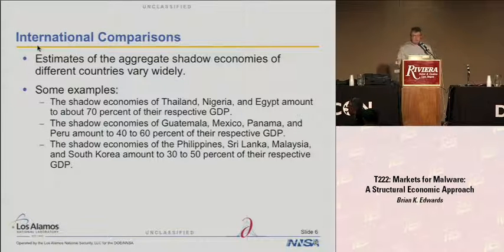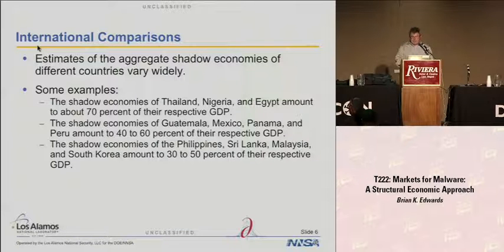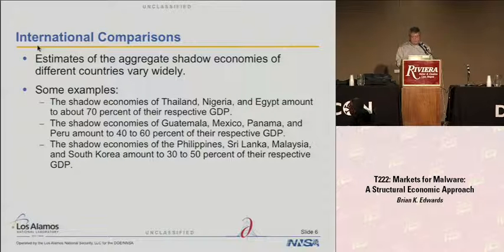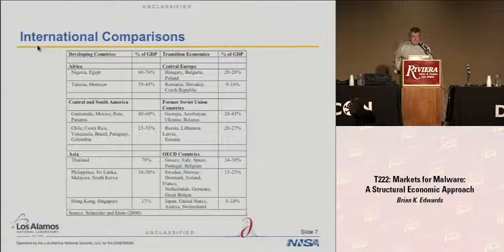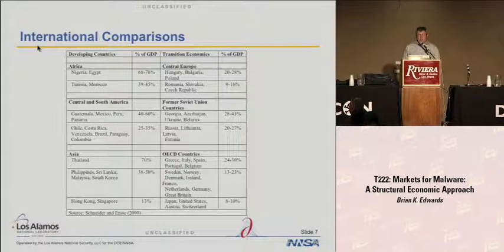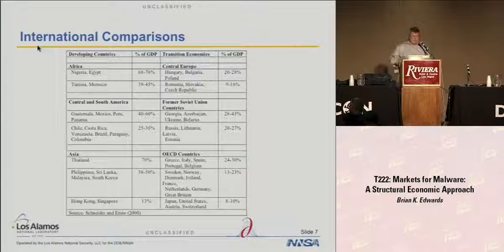As far as international comparisons are concerned, we have some pretty wide variances across countries. Thailand, Nigeria, and Egypt are estimated to be about 70% of their respective gross domestic products. Guatemala, Mexico, and Peru are 40 to 60%. The Philippines, Sri Lanka, and some of these other countries are a little smaller. This is adapted from that Journal of Economic Literature article — basically giving you a sense of the ranges of the sizes of the shadow economies in these different countries. Japan, the United States, Austria, and Switzerland are relatively small. Nigeria and Egypt, on the other hand, are relatively large.